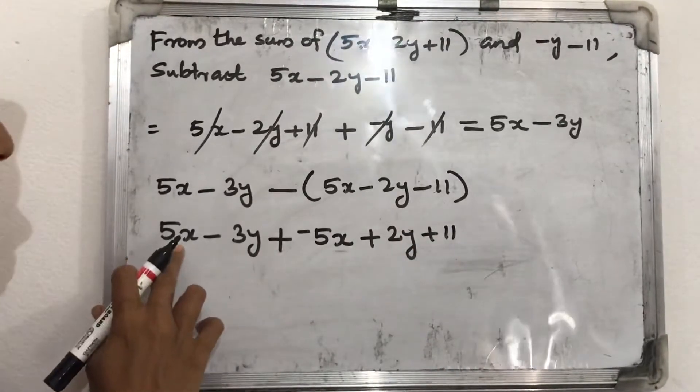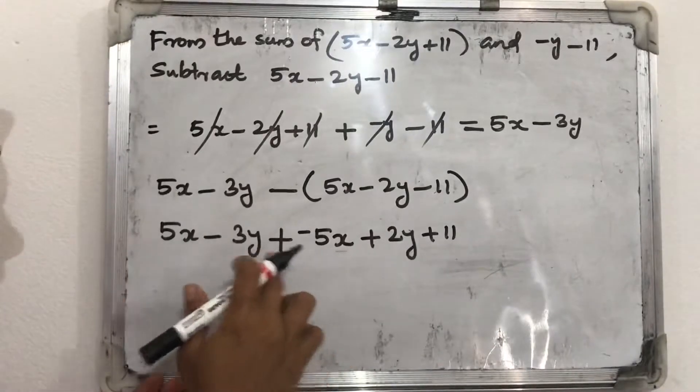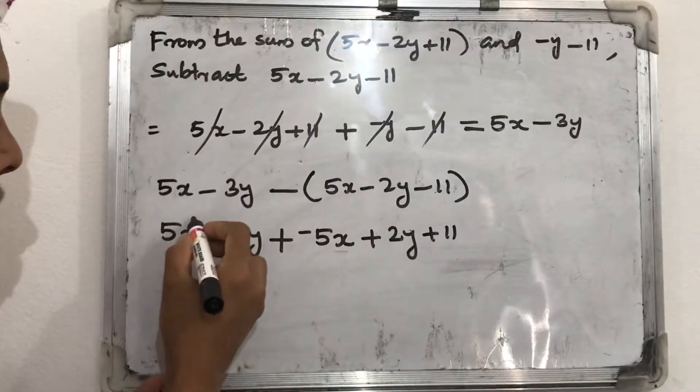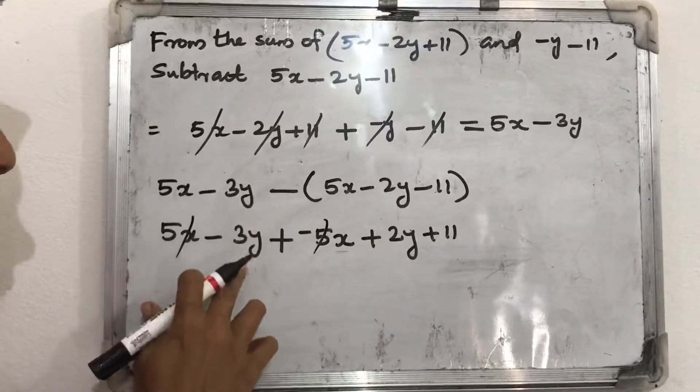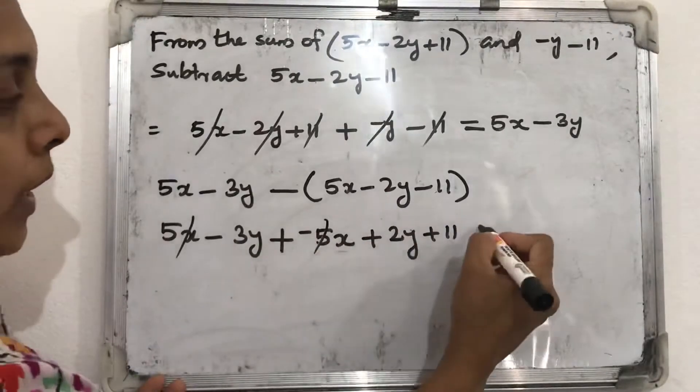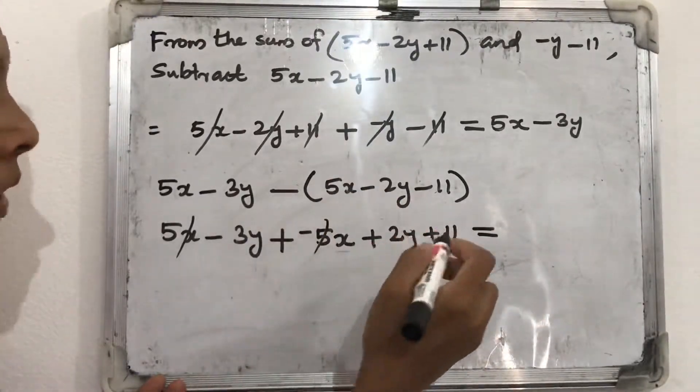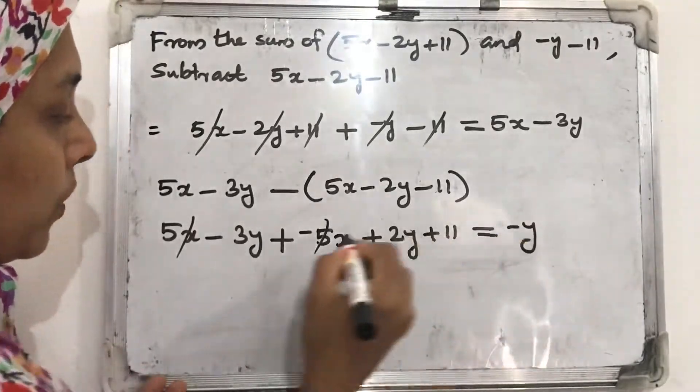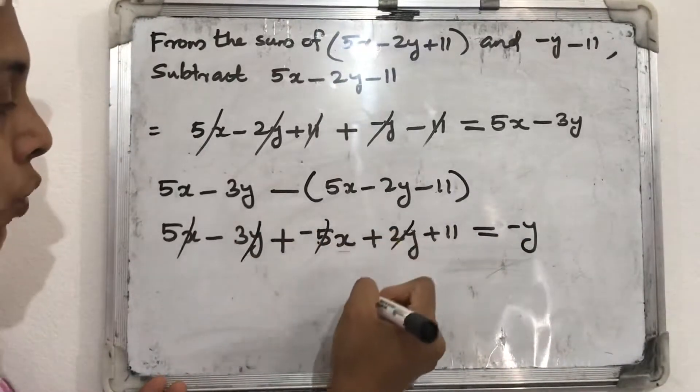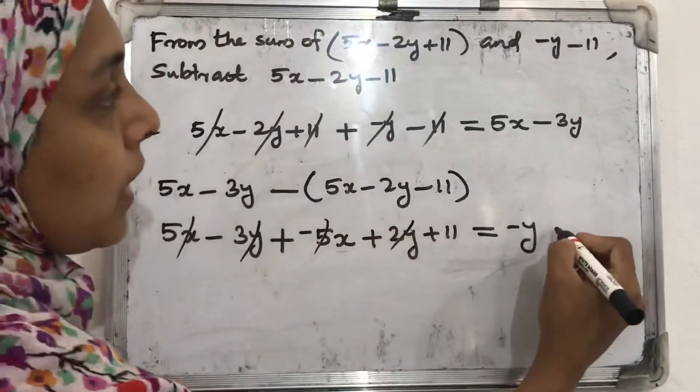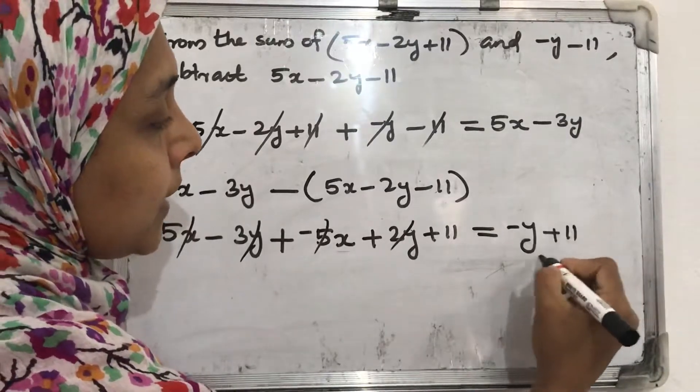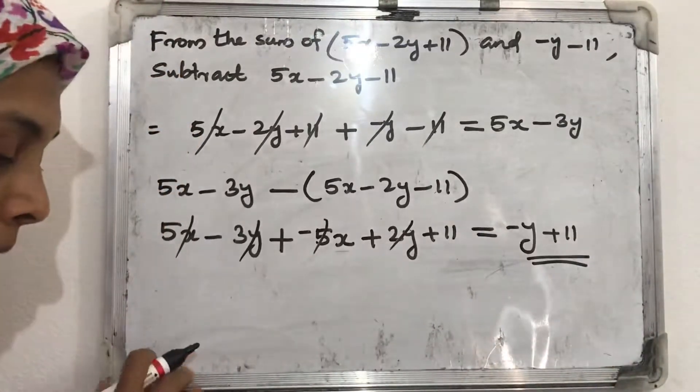Then 5x plus minus 5x, what is its answer? It will become 0. And minus 3y plus 2y. Minus 3 plus 2 will be minus y. Minus 3y plus 2y. Then what is remaining? Plus 11. So what is the answer? Minus y plus 11.